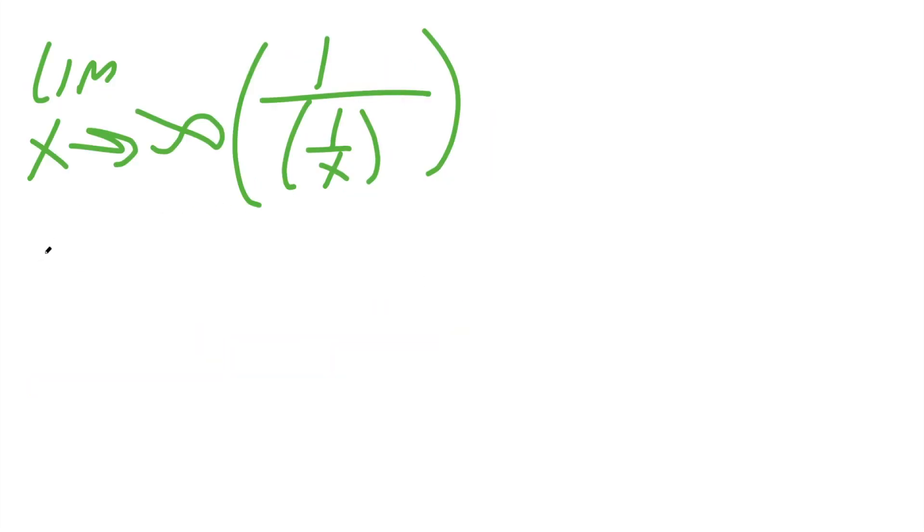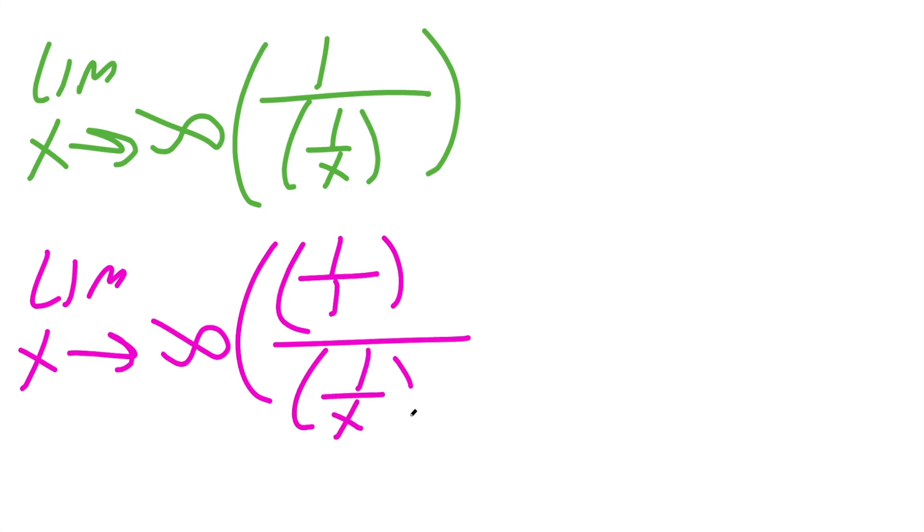And this piece we can actually rewrite. So we can say limit x approaches infinity, instead of saying one in the numerator, we can say one divided by one, that's the same thing, whole thing divided by one divided by x.